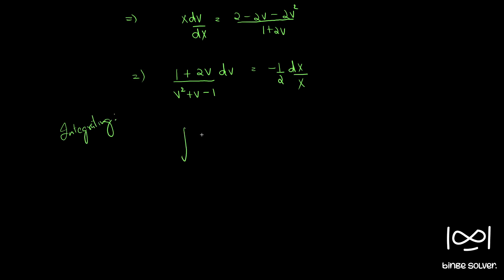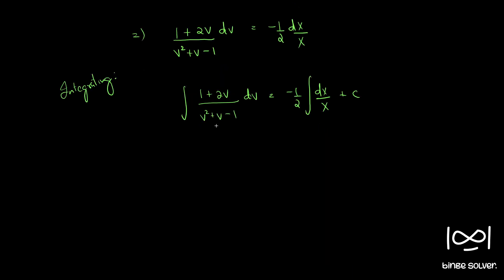Integrating both sides: integral of (1 plus 2v) by (v² plus v minus 1) dv equals minus one half integral of dX/X plus a constant. Observing that the differential of the denominator (2v plus 1) is present in the numerator, the left integral gives log|v² plus v minus 1| equals minus one half log|X| plus C.